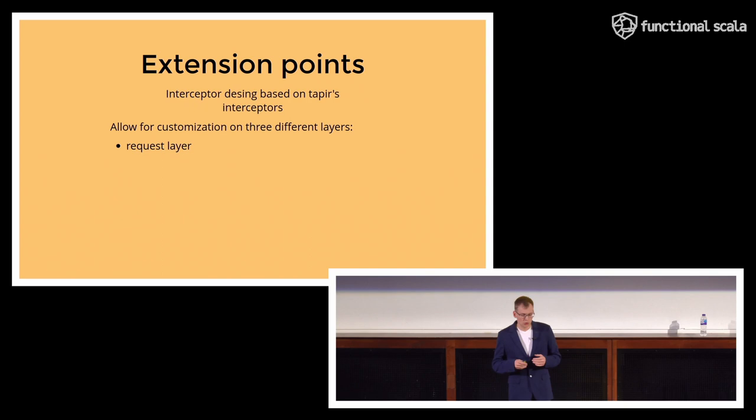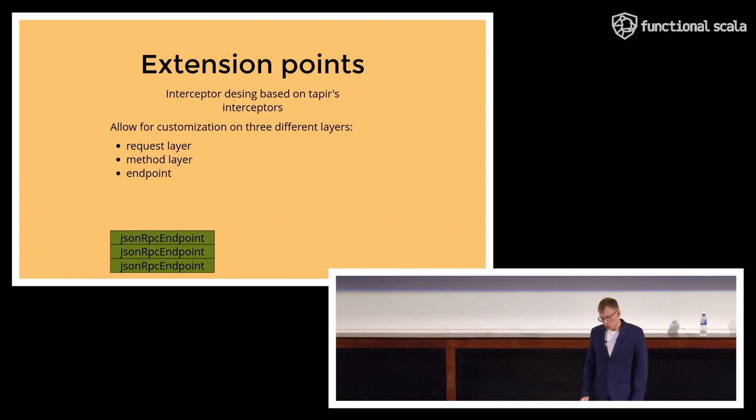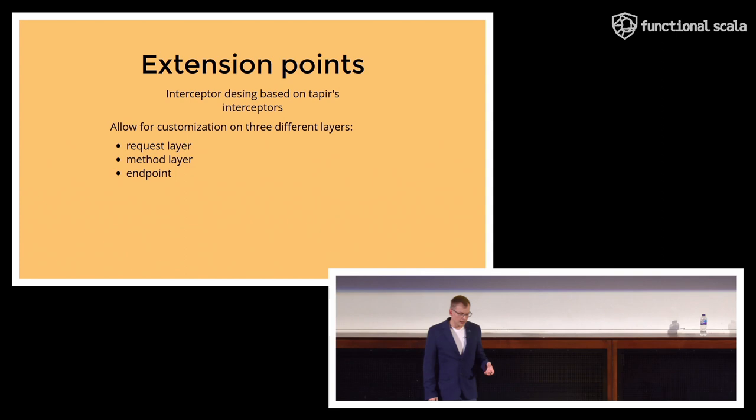And interceptors, their design is based on Tapir's interceptors, because we found this design very powerful, flexible and also elegant. So we allow for customization of Armadillo on three different layers. First of all, we have the request layer, when you will have a raw JSON value, which can be either JSON array or JSON object, because it can be this batch request. Then we have a method layer, when we already unwrapped the batch request, so you will have only those singular JSON-RPC requests. And last, we have the endpoint layer, when we already found a matching JSON-RPC endpoint, and you can parse your arguments accordingly. So, interceptors are actually so powerful that, in fact, we use them to implement some of Armadillo's internal mechanism. For example, error handling or batch request processing are implemented using interceptors.